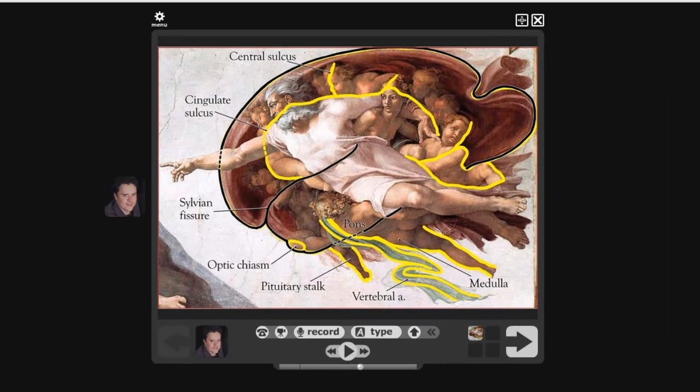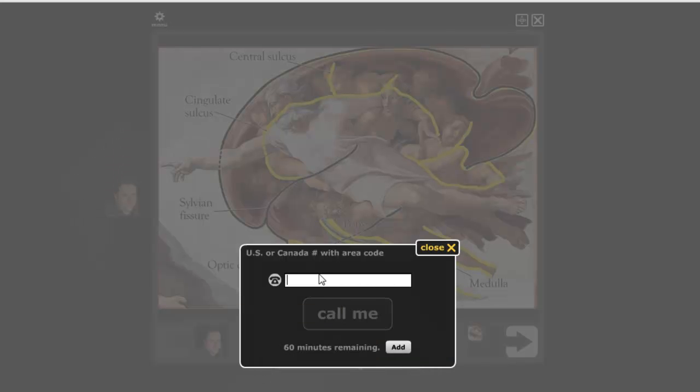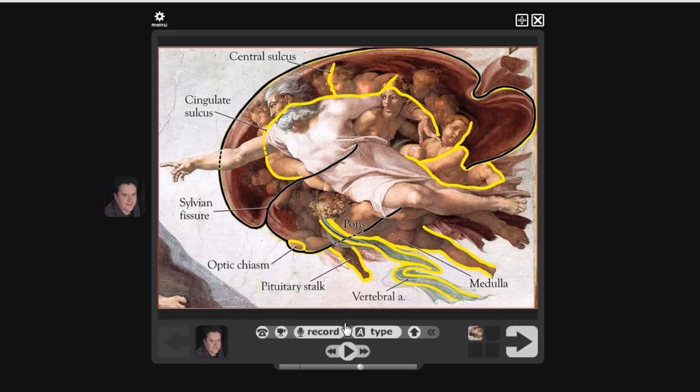And finally, if you want to use the telephone, if you don't have your microphone or Webcam hooked up, all you need to do is click on the telephone icon. Put in your telephone number. And then just press Call Me. Just a few seconds, you'll hear your phone ring.